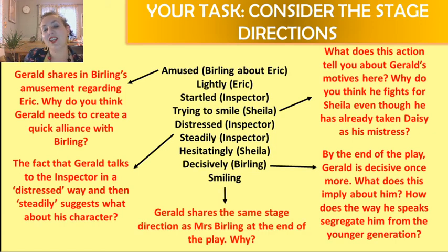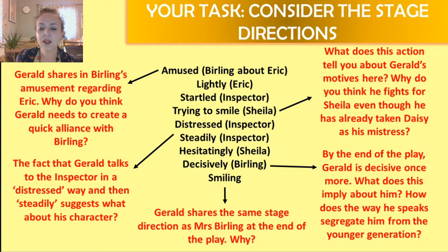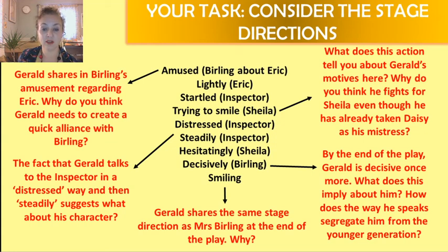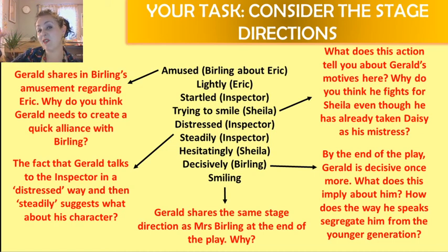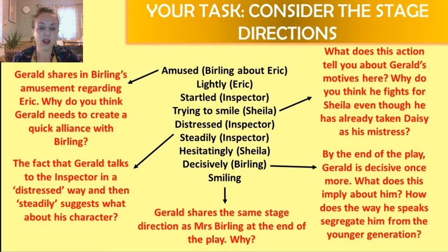The last stage direction — he actually shares it with Mrs. Birling. They're both smiling — smugly, I think is the right word. Why? Is it to segregate himself from the younger generation? Is it so that he can align himself with the people he believes are the ones with power? We, as an audience — J.B. Priestley and us — believe actually that the ones with the power are the socialists, and that Gerald and Mr. and Mrs. Birling are simply wrong.